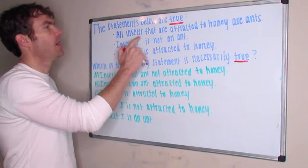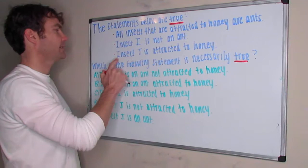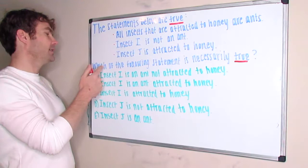All insects that are attracted to honey are ants. Insect I is not an ant, and insect J is attracted to honey. Then the question says which of the following statements is necessarily true?